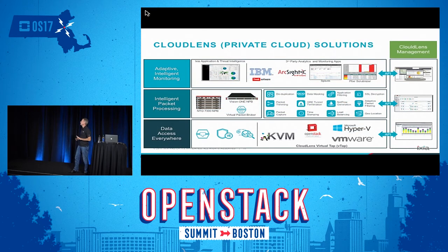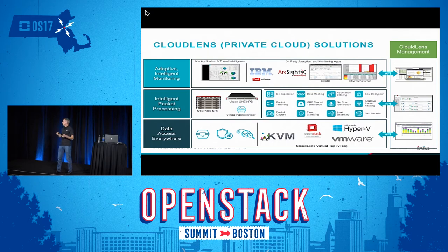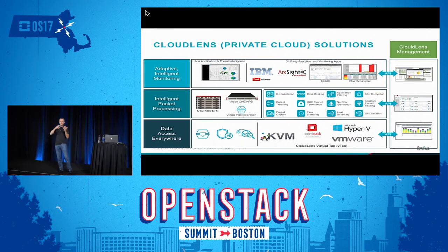Here is another view of the solution with three pillars: data access from everywhere, intelligent packet processing, and adaptive and intelligent monitoring. For data access, you can get your data from physical taps, from virtual taps in multiple hypervisor environments — KVM, OpenStack, VMware, Hyper-V. Then you send your packets to a packet processing feature, physical or virtual, for deduplication, packet trimming, and header stripping. After that, you pass it to the adaptive and intelligent monitoring layer, where the application can request more if needed — all managed from the CloudLens management interface.